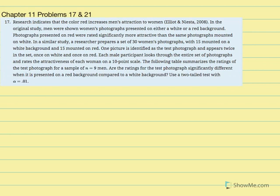Fifteen photographs were mounted on a white background and 15 on red. One picture is identified as the t-test photo and appears twice in the set — once on white and once on red. Each male participant looks through the entire set and rates attractiveness on a 10-point scale. The following table summarizes the ratings for a sample of 9 men. Are the ratings significantly different when the photo is on red versus white? Use a two-tail test with alpha .01.